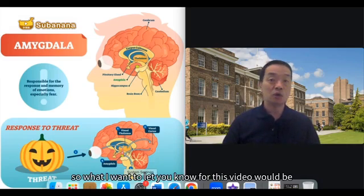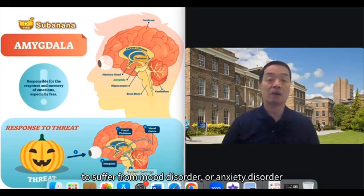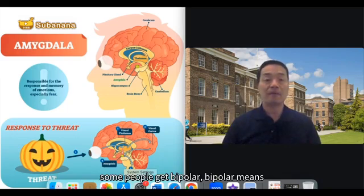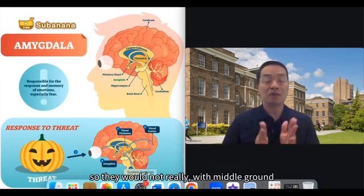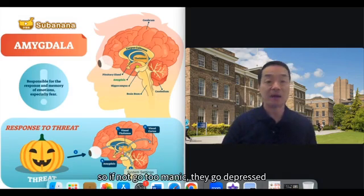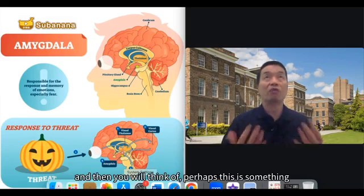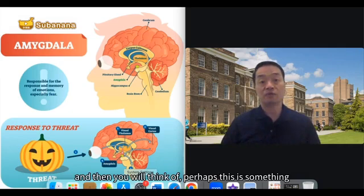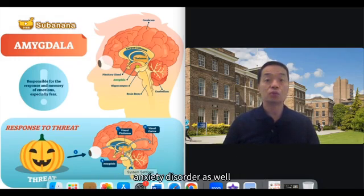What I want you to understand from this video is that in the world there are always people who suffer from mood disorders or anxiety disorders. Some people get bipolar disorder — meaning their mood is never really in the middle ground: if they're not going too manic, they go depressed. You understand this is something related to emotion, and you might think this is caused by dysfunction of the amygdala. Many disorders are also called anxiety disorders.